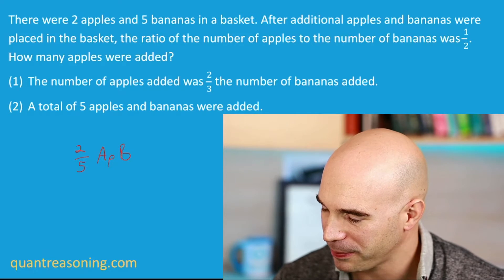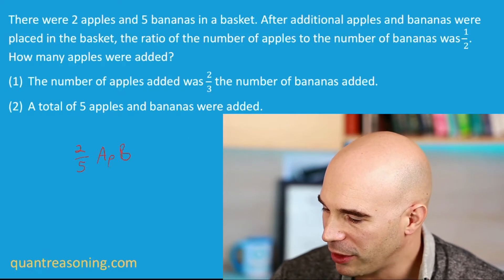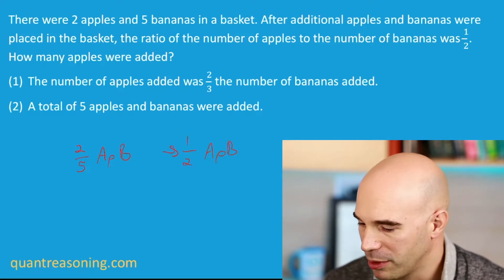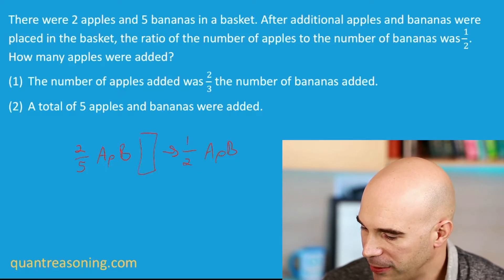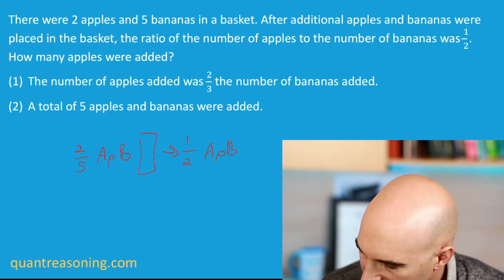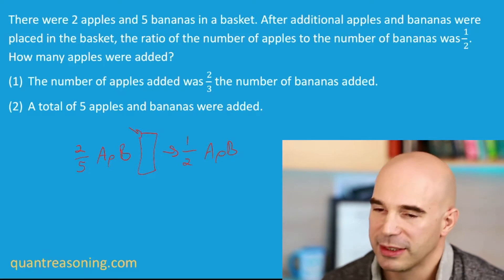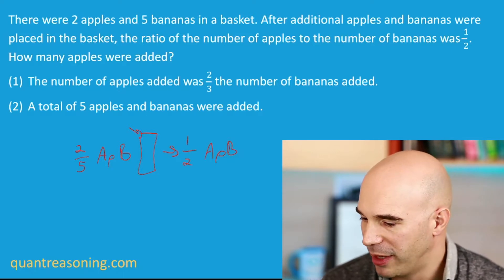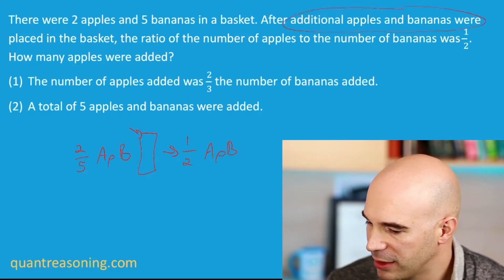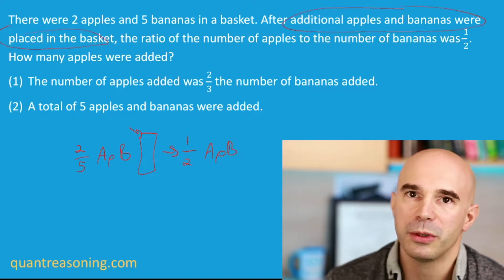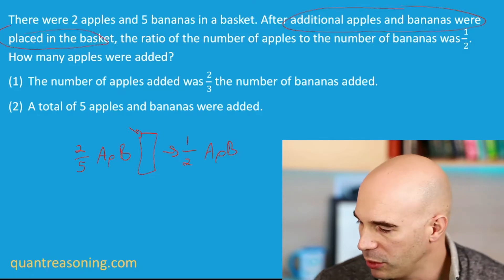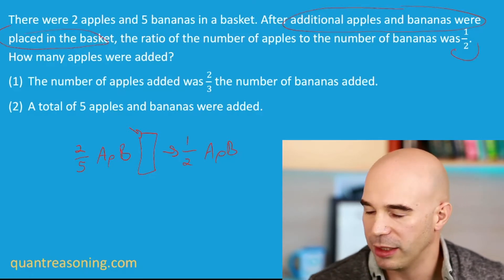So we're starting with two-fifths, and then we're mixing that with another ratio. We end up with half an apple per banana, and the question is asking about the actual number of apples in that new ratio that we know nothing about. Additional apples and bananas were placed in the basket, and we end up with a half.